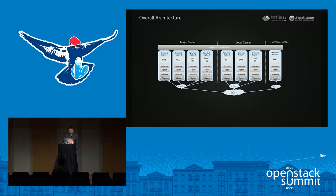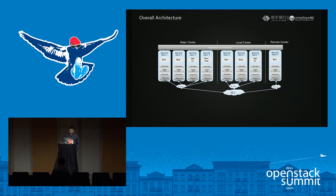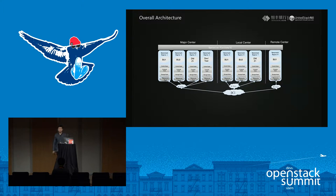This is the overall architecture of HongFong Bank. We have two DCs named Major Center and Local Center, both located in the same city, and a Remote Center located in another city. Each center is divided into regions named BUX or DMZX. There is also one region for dev or test, which allows developers to do POC before changing configuration or pushing new services.